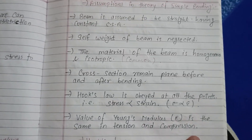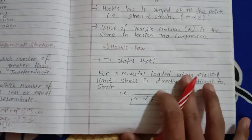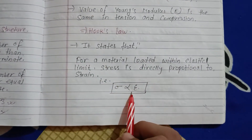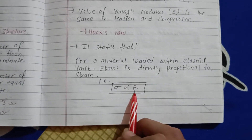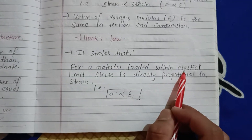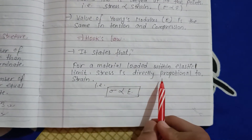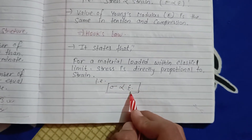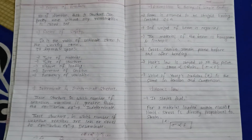Hooke's law states: for a material loaded within the elastic limit, stress is directly proportional to strain — sigma is proportional to E. This is the fundamental definition of Hooke's law.